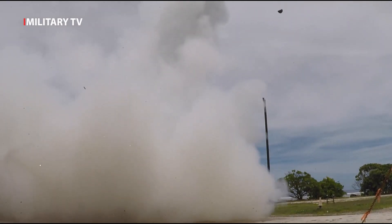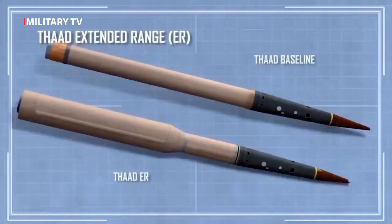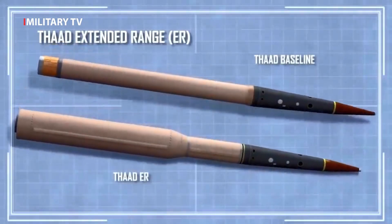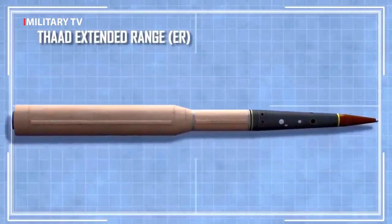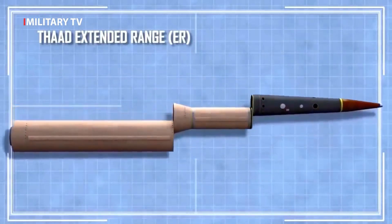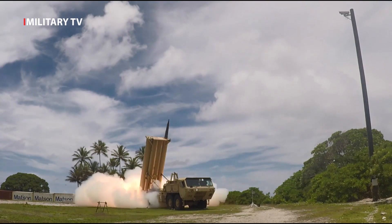The THAAD missile has the ability to intercept enemy missiles which come at an altitude of about 40 to 50 kilometers. On that basis, the THAAD missile is unsuitable for pursuing enemy fighter jets, which fly at much lower altitudes.